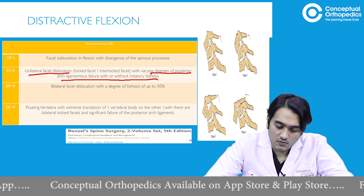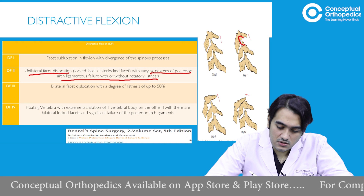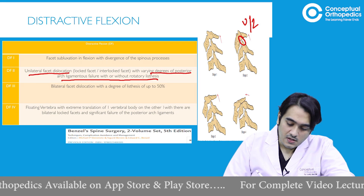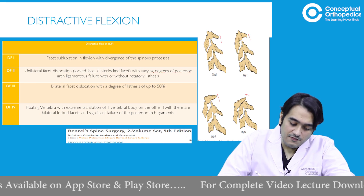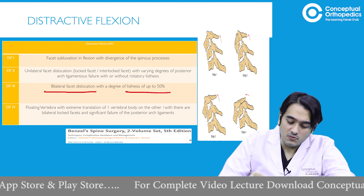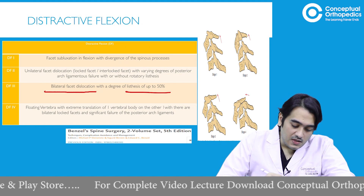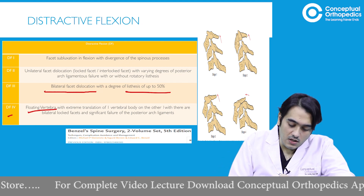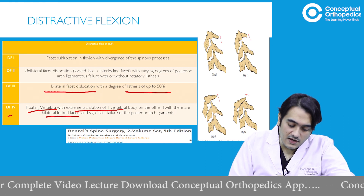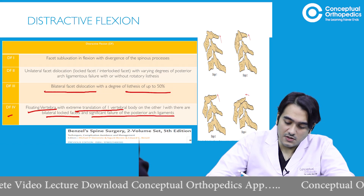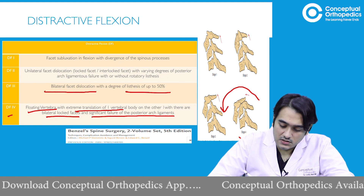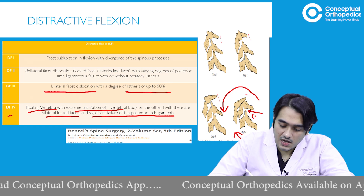In distractive flexion stage three, the unilateral facetal dislocation may become a bilateral facetal dislocation with listhesis up to 50 degrees. In stage four, there is a floating vertebral body with extreme translation, bilateral locked facets, and significant failure of the posterior arch ligaments. As seen in the image, this vertebral body has toppled with bilateral facetal dislocation and possible locking of facets.